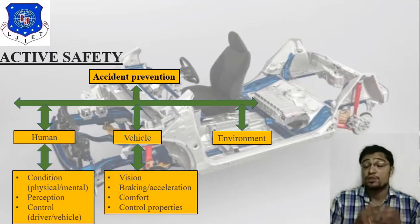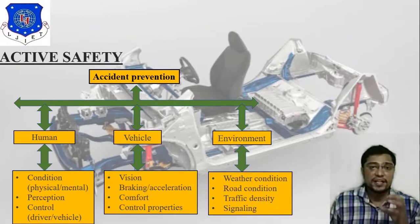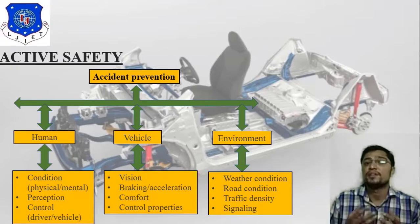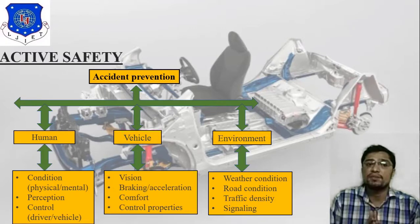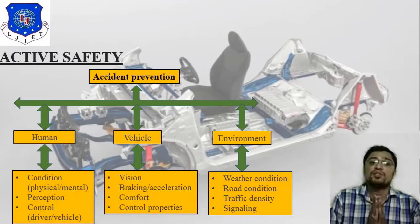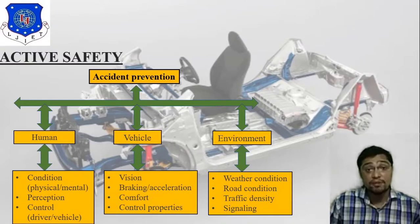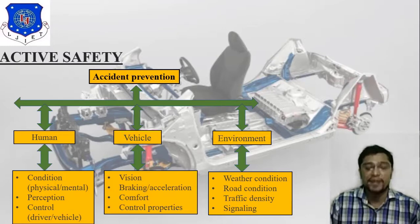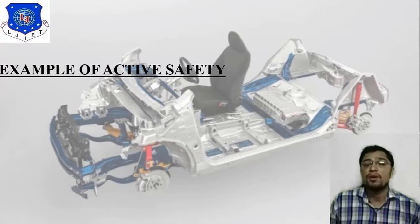Vision is very important. For the third criterion — environment — we consider weather condition, road condition, traffic density, and signaling. So in active safety we consider three criteria: human, vehicle, and environment. This is how we can explain active safety.